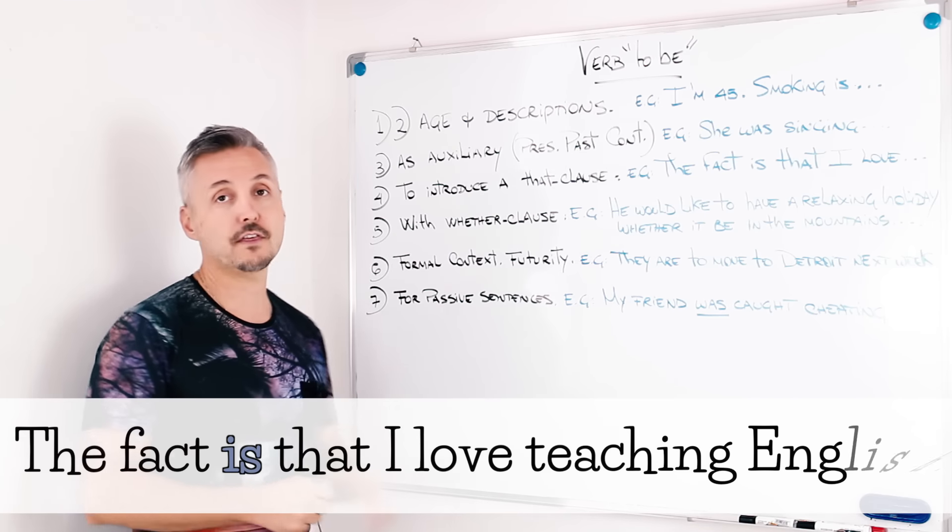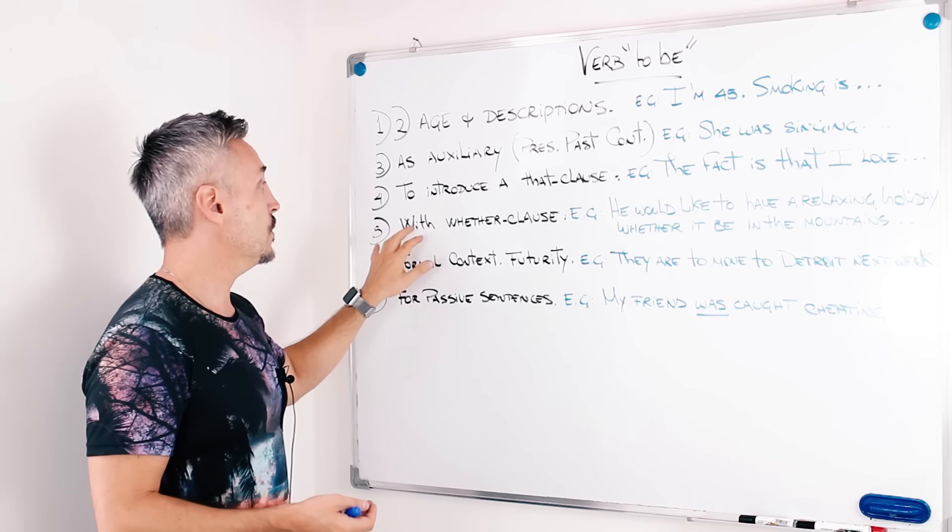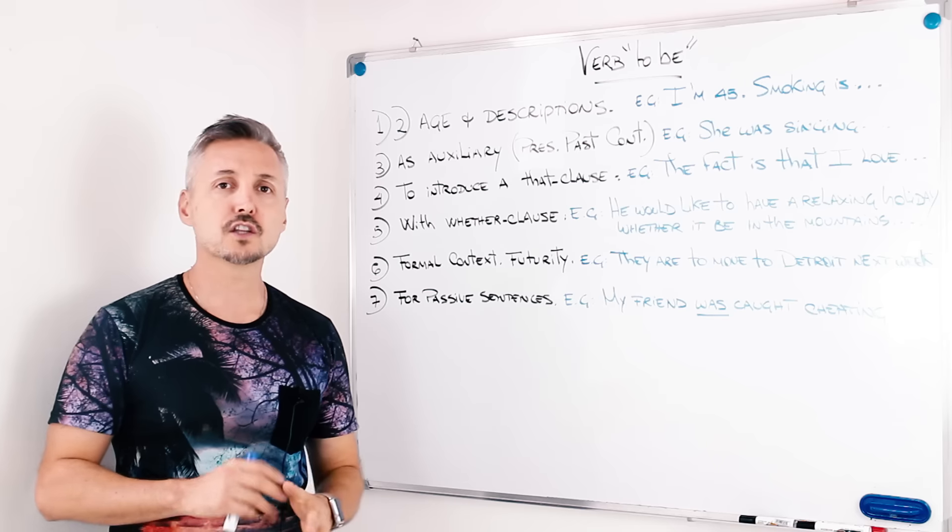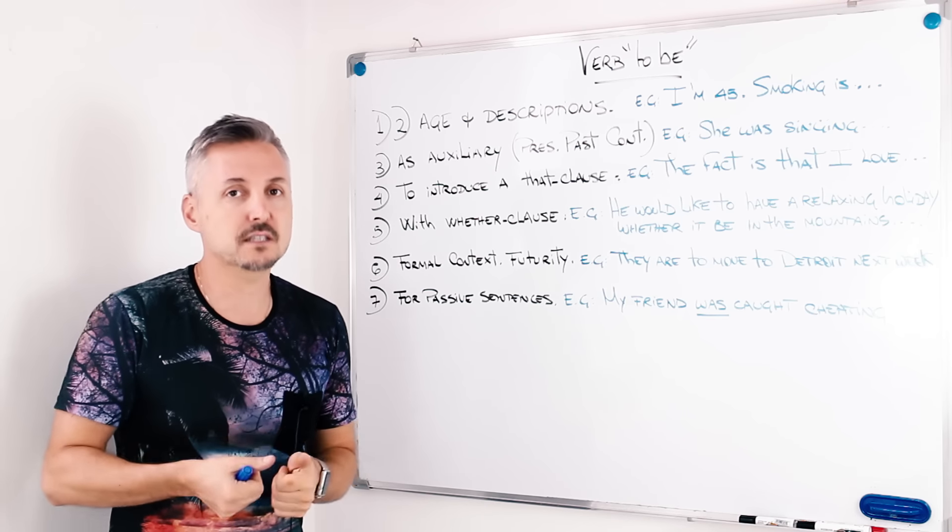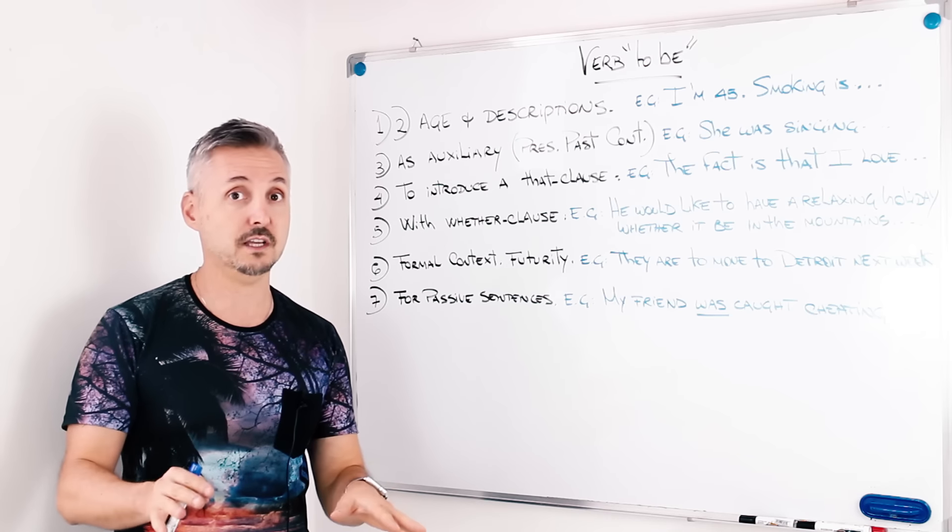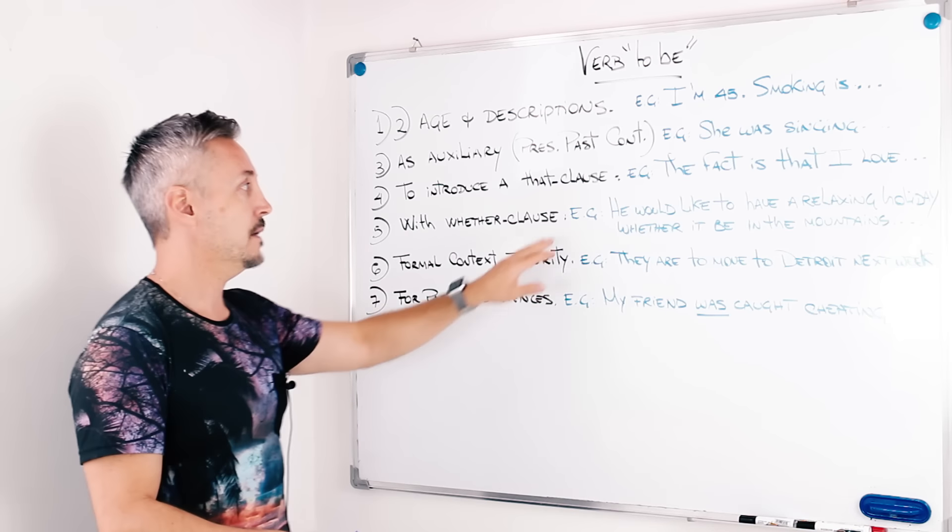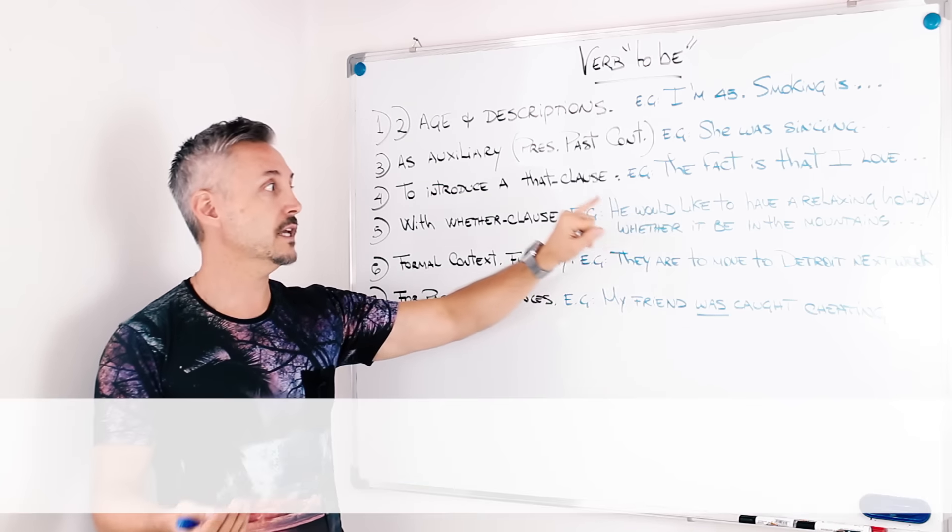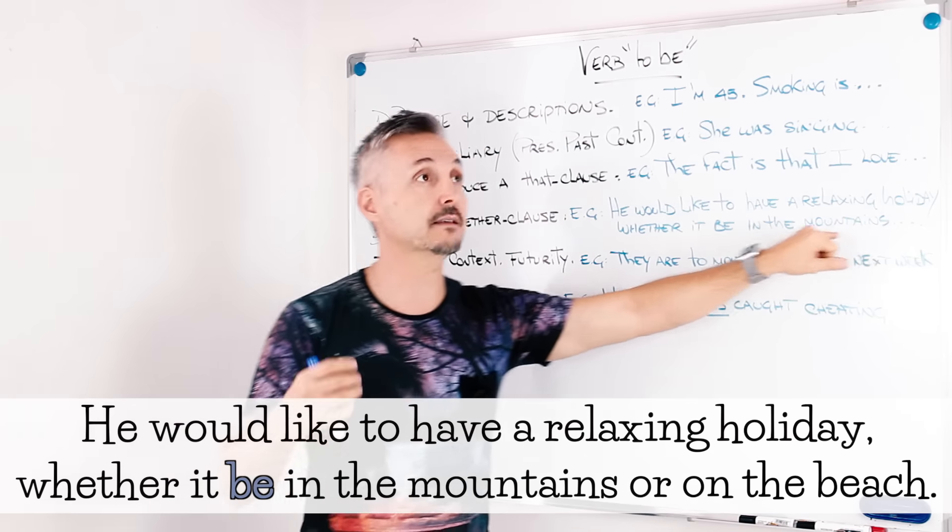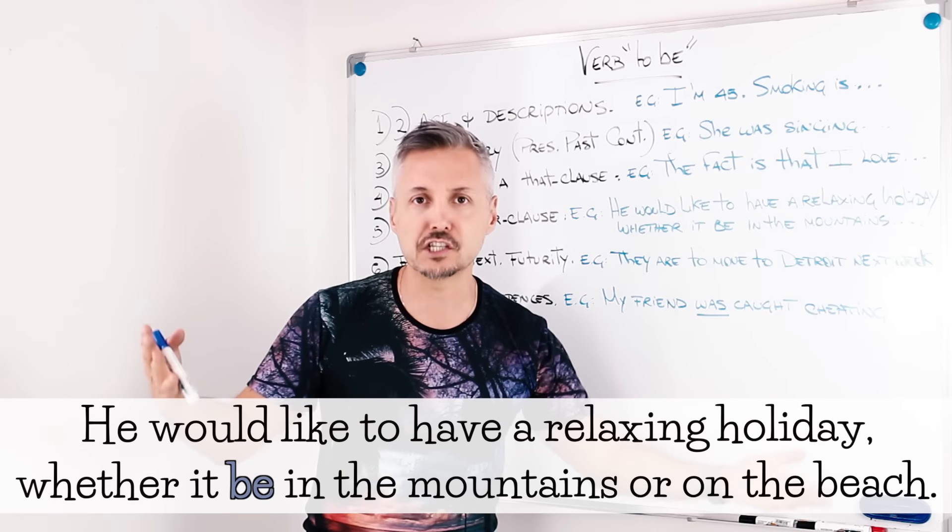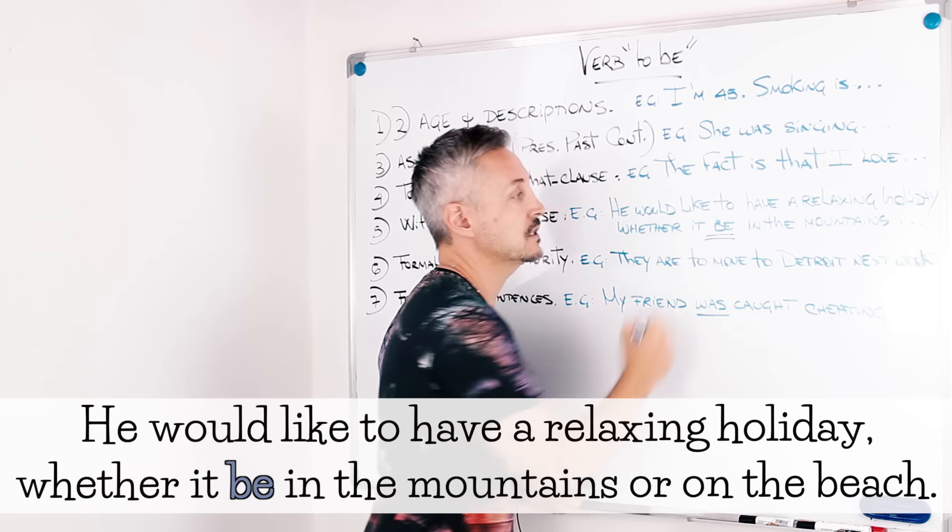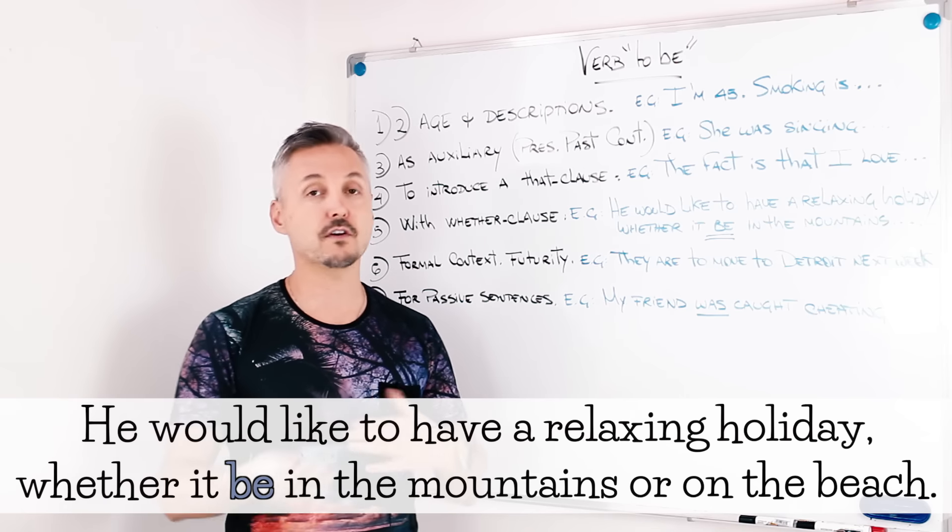For the fifth example, we use it with the weather clause. And here, the verb to be turns into a subjunctive form. I'm going to dedicate a lesson on the subjunctive, so don't worry about it. But the example was, he would like to have a relaxing holiday, whether it be in the mountains or on the beach, I said. Whether it be. So this would be a subjunctive form of the verb to be.